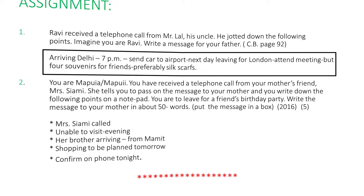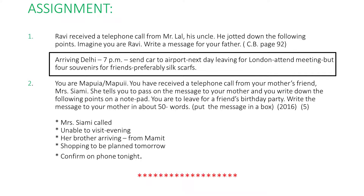Assignment number one: Ravi received a telephone call from Mr. Lal, his uncle. He jotted down the following points. Imagine you are Ravi and write a message for your father. This is from course book page number 92. Points noted: arriving Delhi 7 PM, send car to airport, bought souvenirs from London, attended a meeting, bought a silk scarf as a gift.